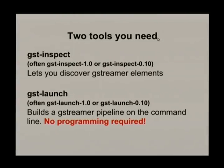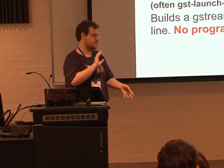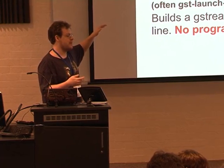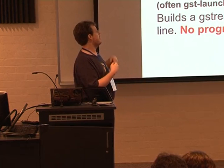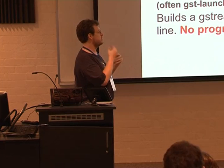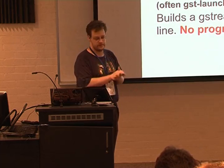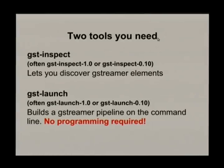GST Inspect basically lets you inspect the elements — it's kind of like the --help of GStreamer. When you type in command lines like 'find --help' it gives you a description of each argument and how it affects the output. GST Inspect is the equivalent of that, or like the man command equivalent. You type 'gst-inspect' followed by the name of the element and it will print as much information as it can find about that element. The other tool is gst-launch, which lets us build these pipelines on the command line — a simple tool where you give it a list of elements and it starts up and builds that pipeline.